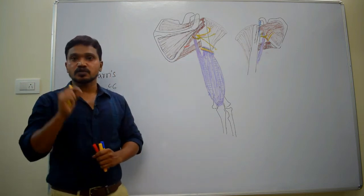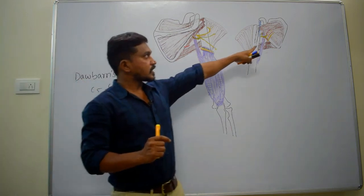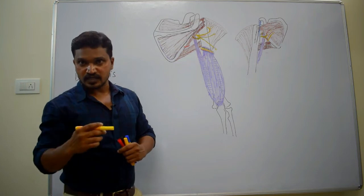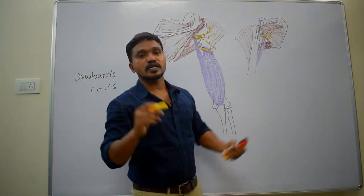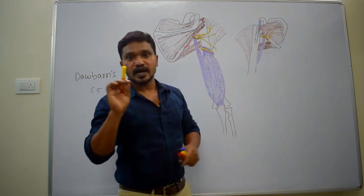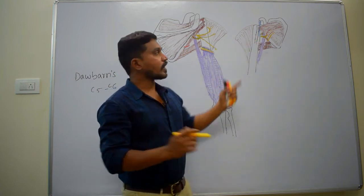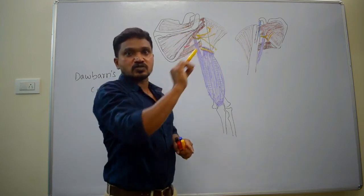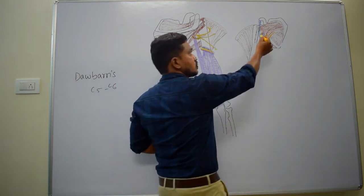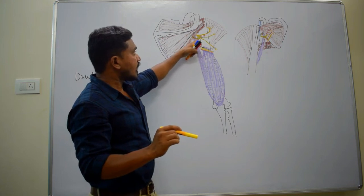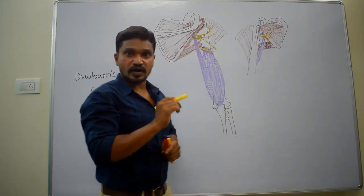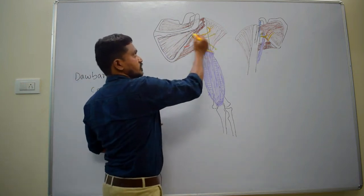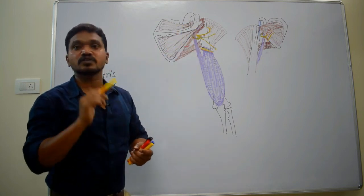To recollect: the axillary nerve is a branch from the posterior cord of the brachial plexus, root value C5-C6. It is present in the lower part of the axilla, behind the axillary artery and in front of the subscapularis muscle. Relations in the axilla: anteriorly the axillary artery, posteriorly subscapularis, laterally coracobrachialis. The nerve leaves the axilla by winding around the inferior border of the subscapularis muscle, where it is intimately related with the capsule of the shoulder joint and gives a branch to it. It then enters the quadrangular space and appears in the posterior aspect, dividing into anterior and posterior divisions. The anterior division winds around the surgical neck of the humerus along with the posterior circumflex humeral vessels.